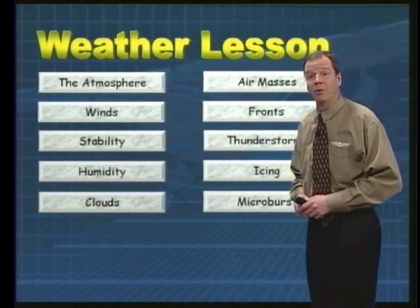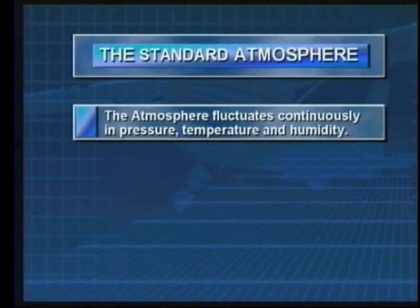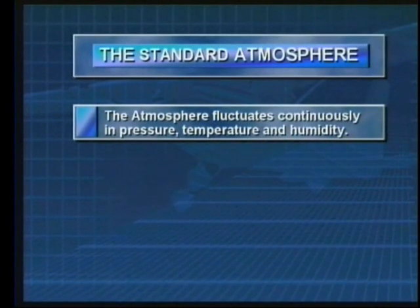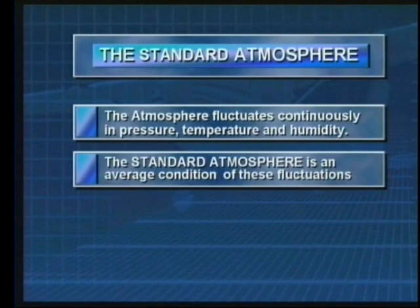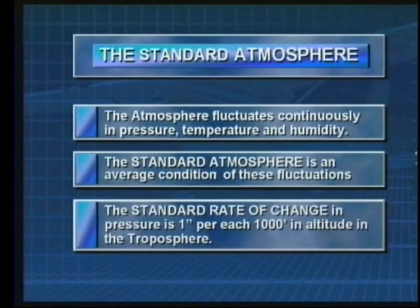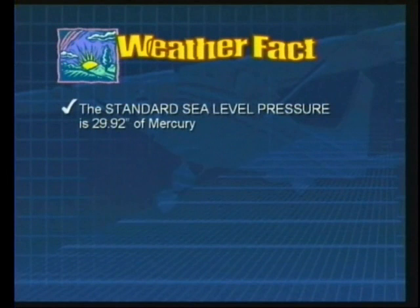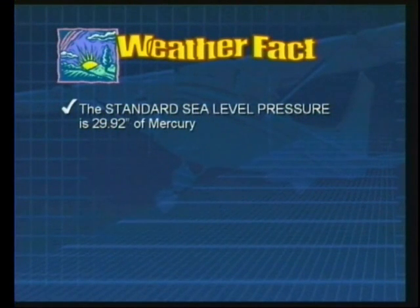Now the atmosphere fluctuates continuously as it tries to reach equilibrium in pressure, temperature, and humidity. The standard atmosphere is an average condition of all of these fluctuations. The standard rate of change is about one inch per one thousand foot gain in altitude in the troposphere. The standard sea level pressure is 29.92 inches of mercury, or about 1013 millibars of mercury.